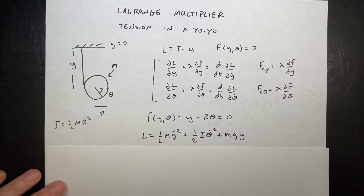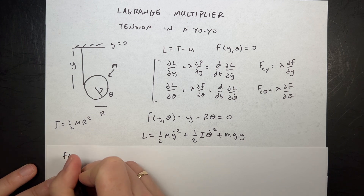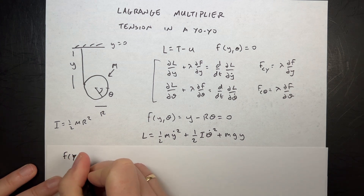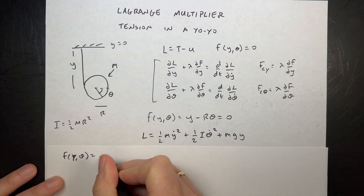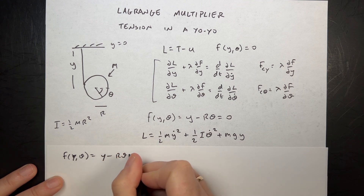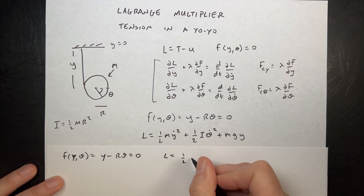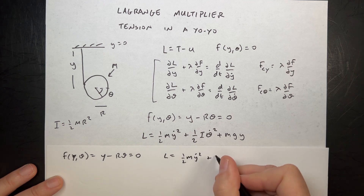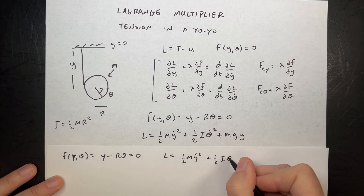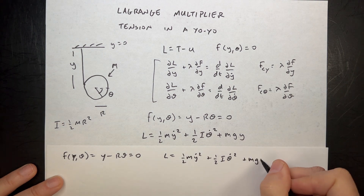Let me write down the Lagrangian and the constraint: F(Y, θ) = Y minus R·theta equals zero, and L = one-half M·Y-dot squared plus one-half I·theta-dot squared plus M·G·Y.